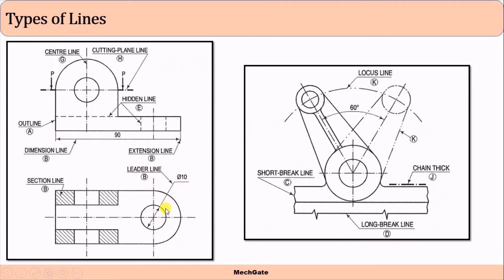This line is called the leader line. To represent the diameter or radius of a circle, we extend that line outside the object, draw it horizontal, and represent the diameter in this way — this line is called the leader line.